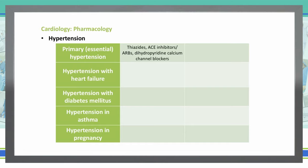When dealing with hypertension and heart failure, we're going to use diuretics first, and then we can also add in ACE inhibitors or angiotensin receptor blockers, beta blockers — which are specifically used in compensated heart failure — as well as aldosterone antagonists.